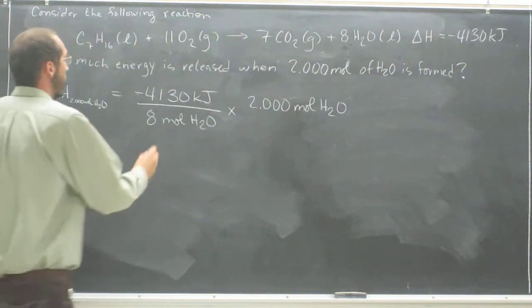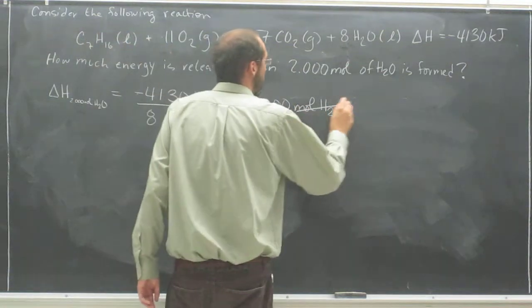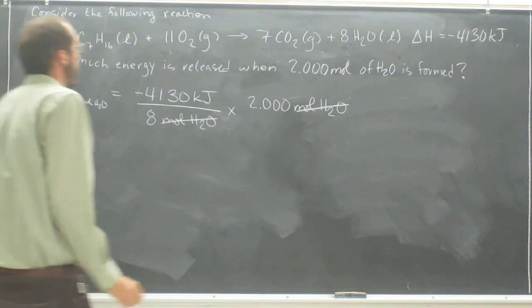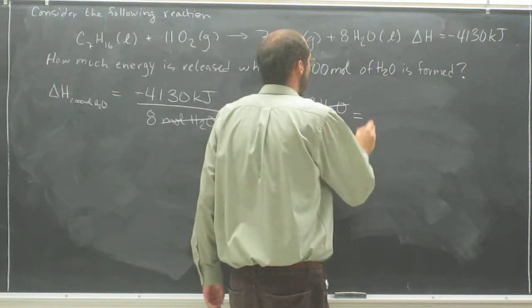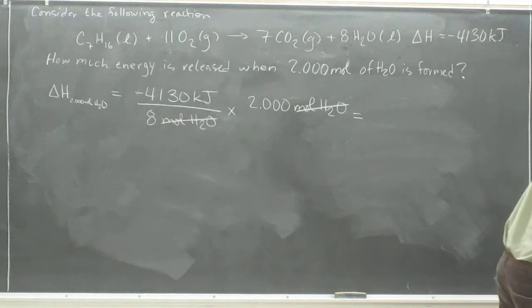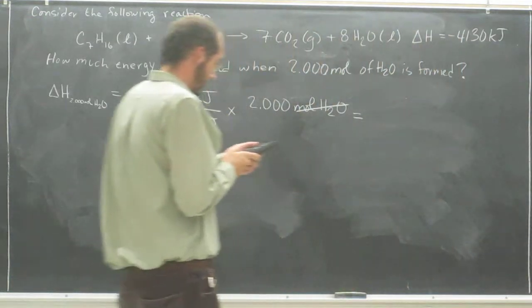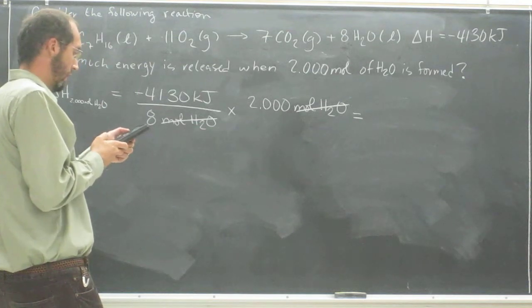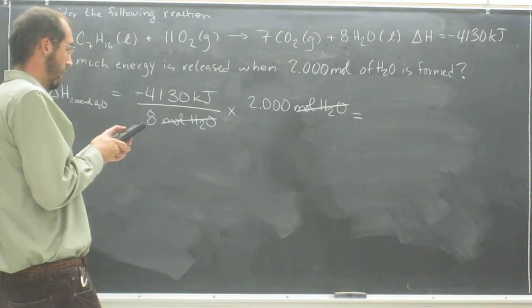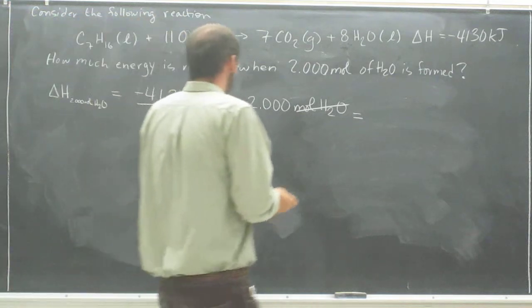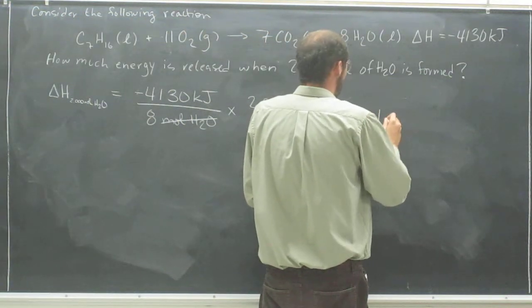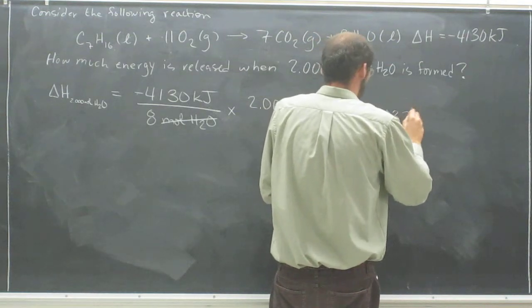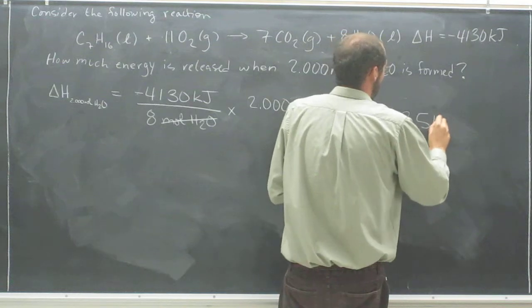Of course now, moles of H2O cancel out there, cancel out there. So now, you just take negative 4,130, divide that by 8, and then multiply it by 2. And then you get negative 1,032.5 kilojoules.